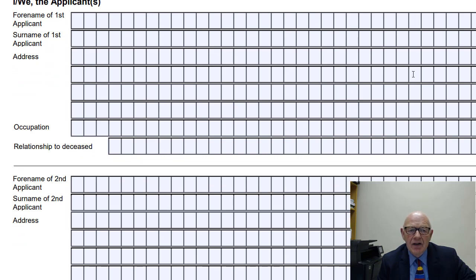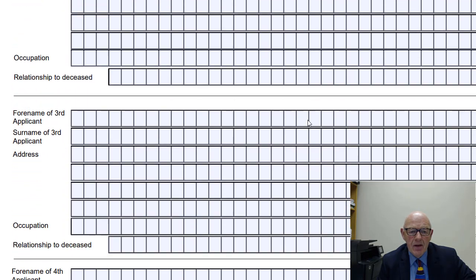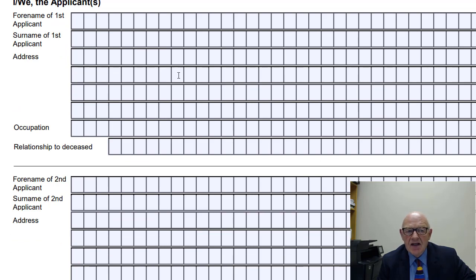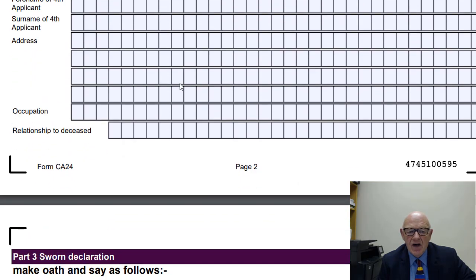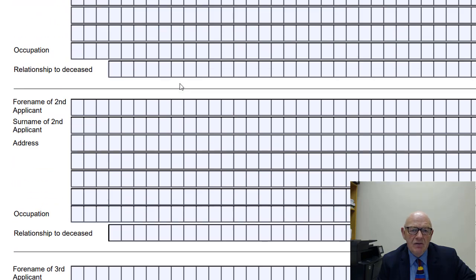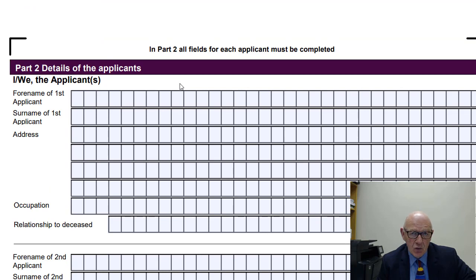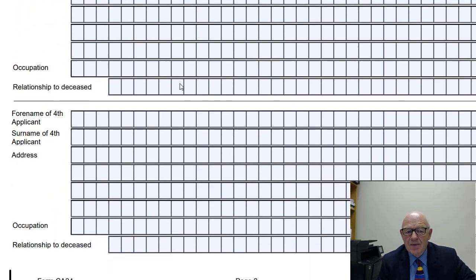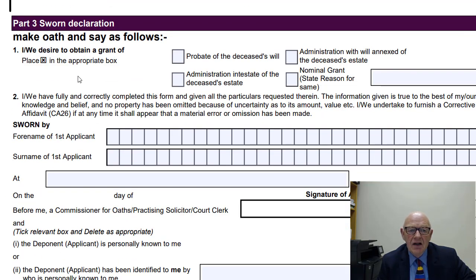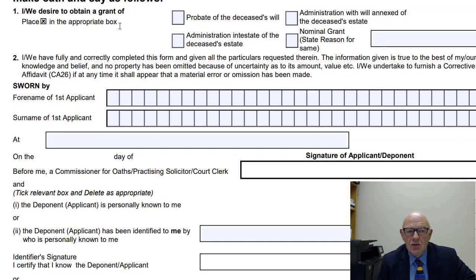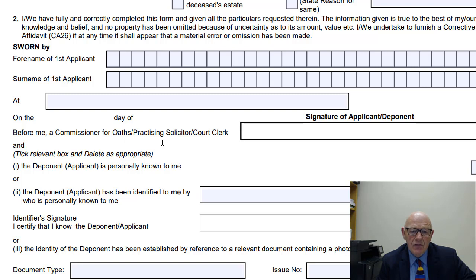Part 2 has details of the applicants — the people or person who is seeking to extract a grant of representation. If you were appointed as the executor or a joint executor, your name goes in here along with your occupation, address, and relationship to the deceased. There's space for a number of applicants. Normally there's one or two executors named in the will. The person making the application then has to make an oath, swearing that they desire to obtain a grant of probate or administration, and have it sworn in front of a commissioner for oaths or a practising solicitor.